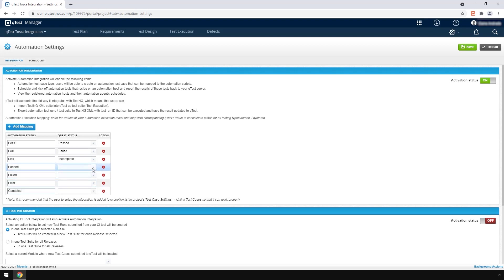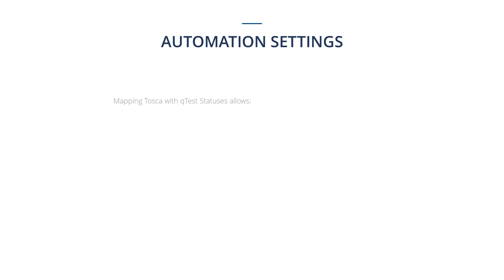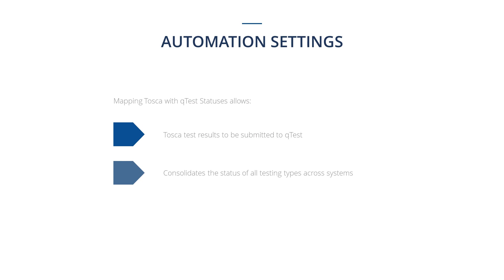Now map these statuses with their corresponding QTES status. Mapping these values allows the test results from Tosca to be successfully submitted into QTES and consolidates the status of all testing types across the systems.